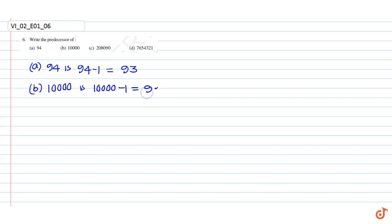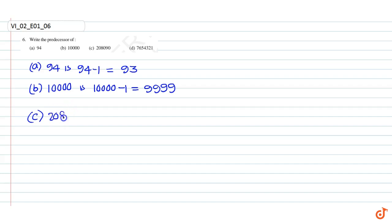9,999. The predecessor of 208,090 is 208,090 minus 1, which is